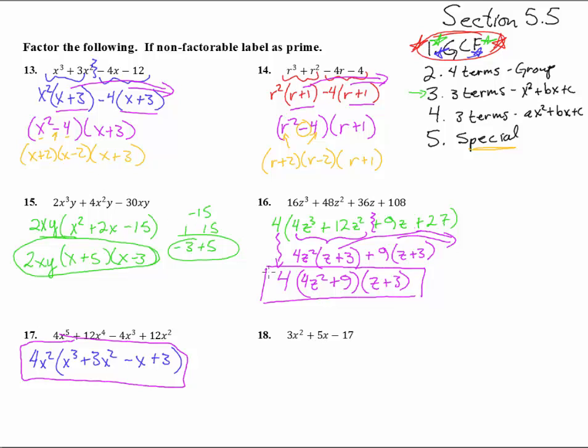3X squared plus 15X minus, plus 5X minus 17. Let me see. No greatest common factor, and we have 1, 2, 3 terms. And we're here in method 4 to see if that works. 3 times negative 17 is a negative 51. 1 and 51, that's not going to add to a positive 5. 3 and 17, I think, are the only things that can times up to negative 51. And they're not going to add to a positive 5. So this is prime. We're done.